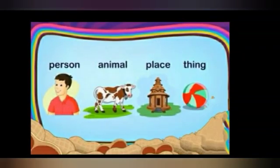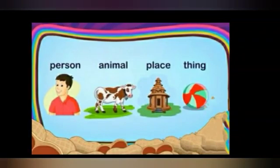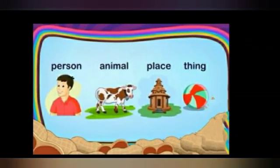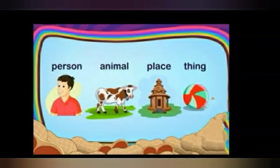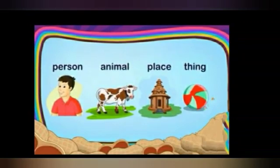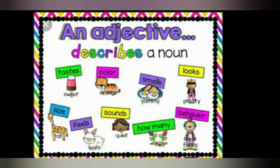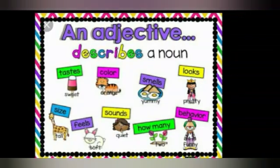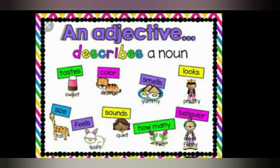What is a noun? A noun is a word that names a person, place, animals, and things. In many ways, we can describe a noun.